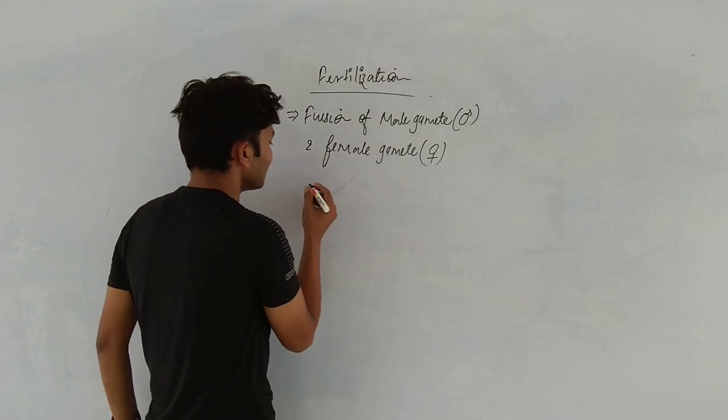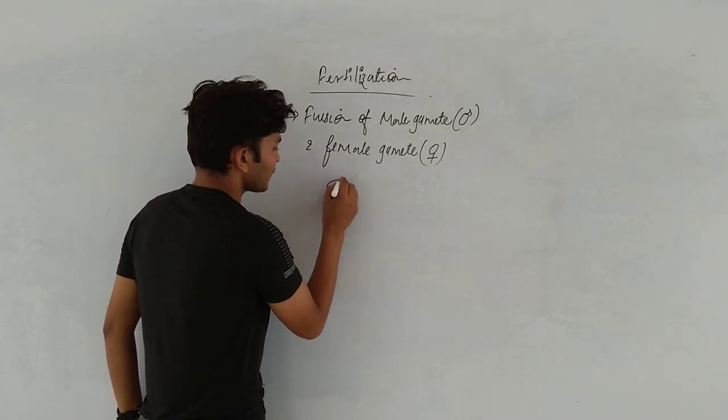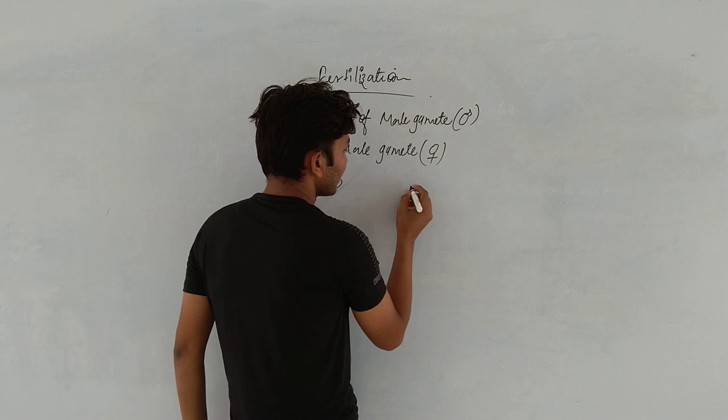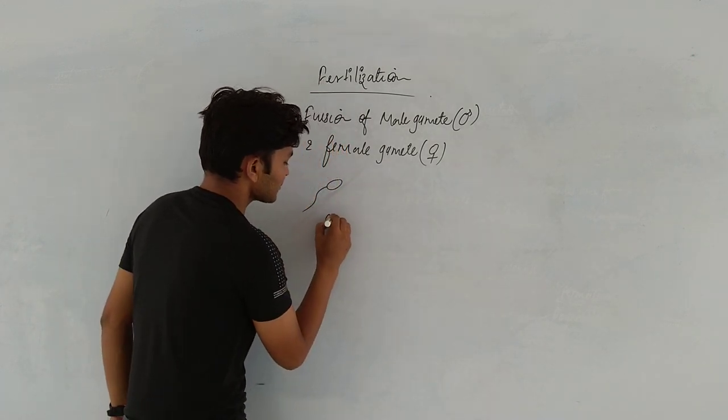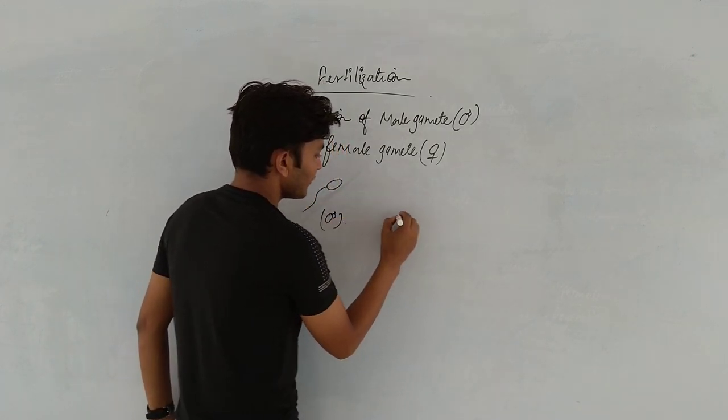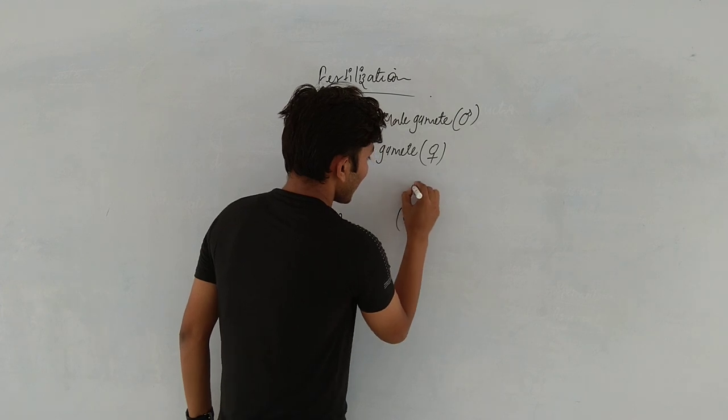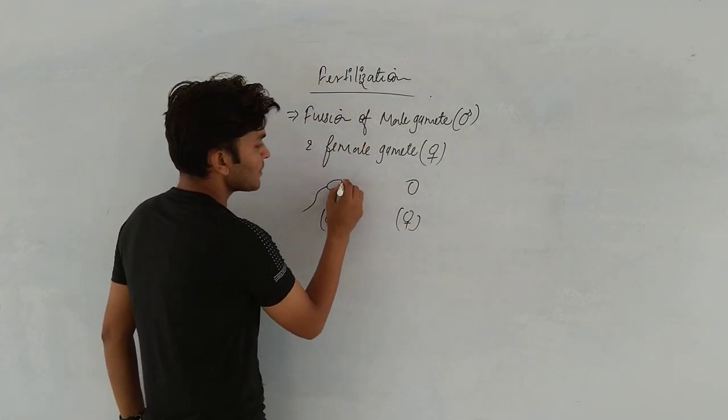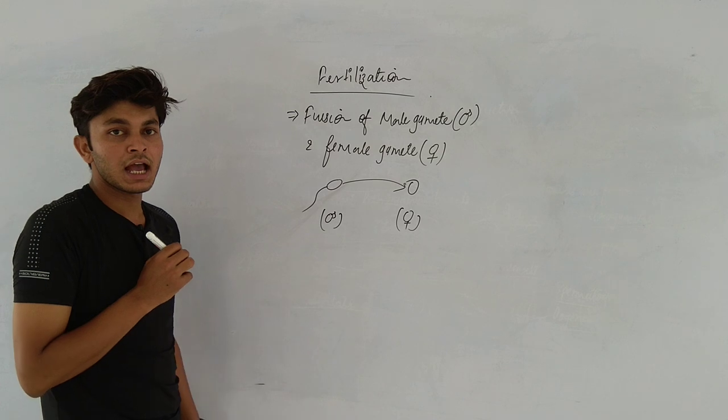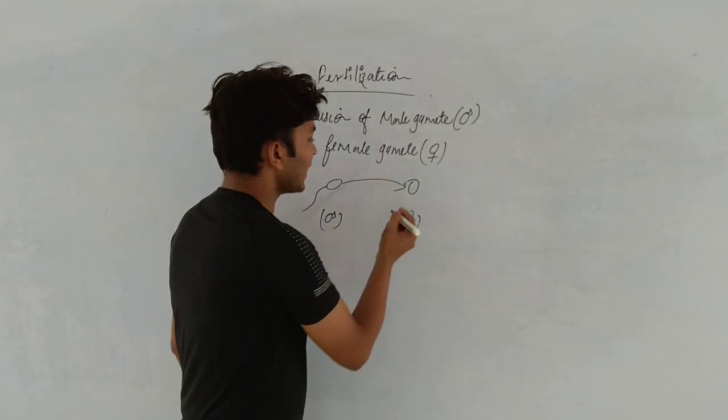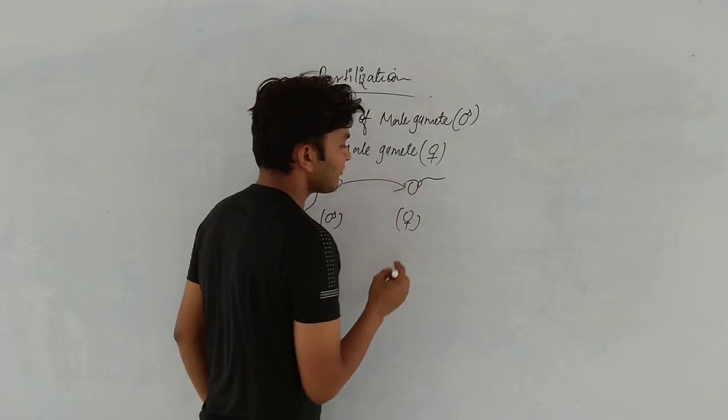For example, if we talk about human beings, the sperm and egg are involved. Sperms will reach the egg and penetrate to the egg. Finally, the sperm fuses with the egg.